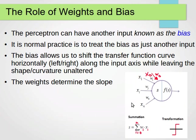Now, we actually have another input called the bias, apart from the weights. And it's normal to treat the bias as just another input, so we can add it to our summation.